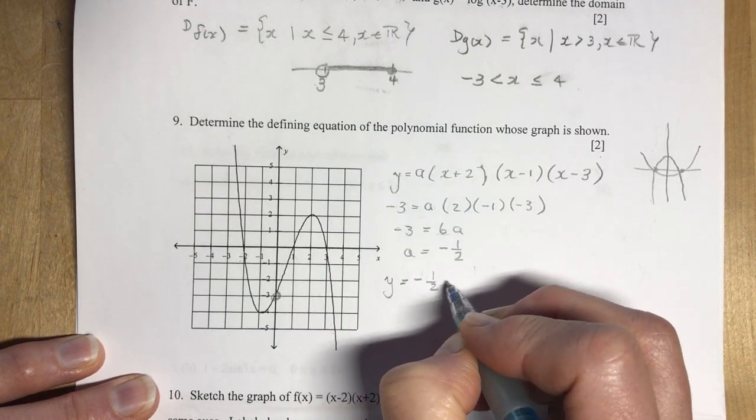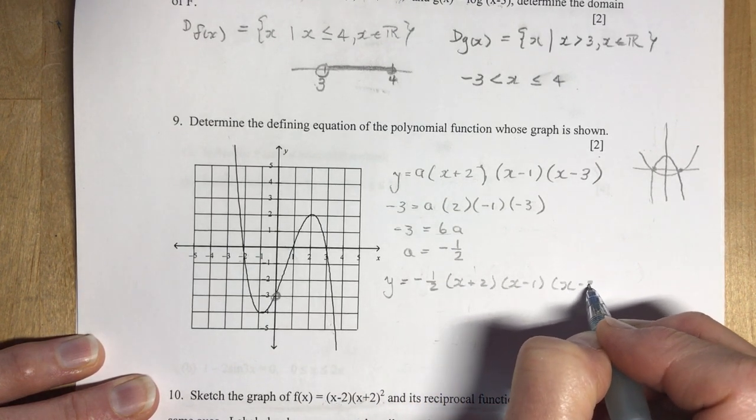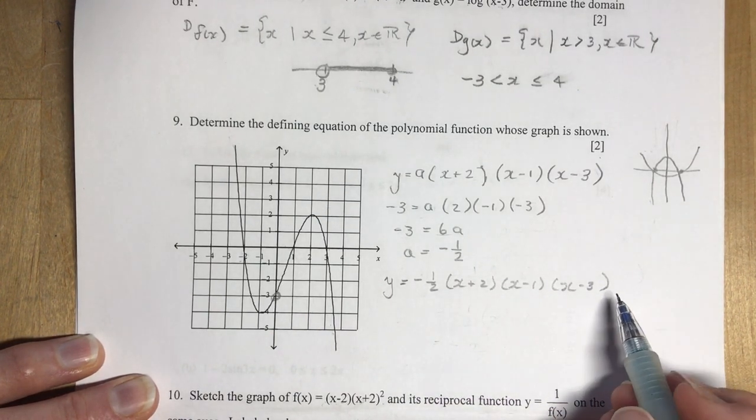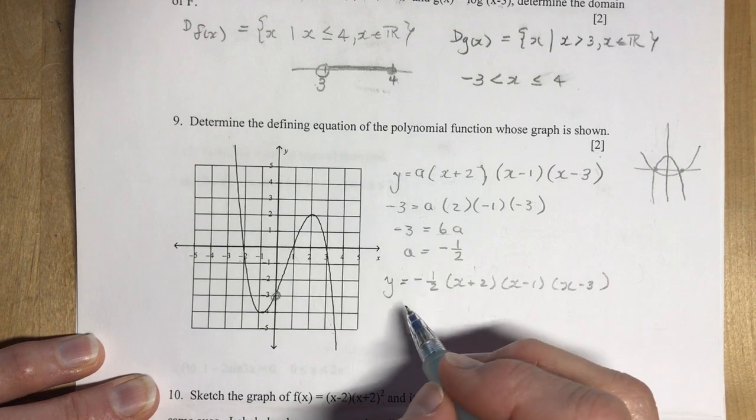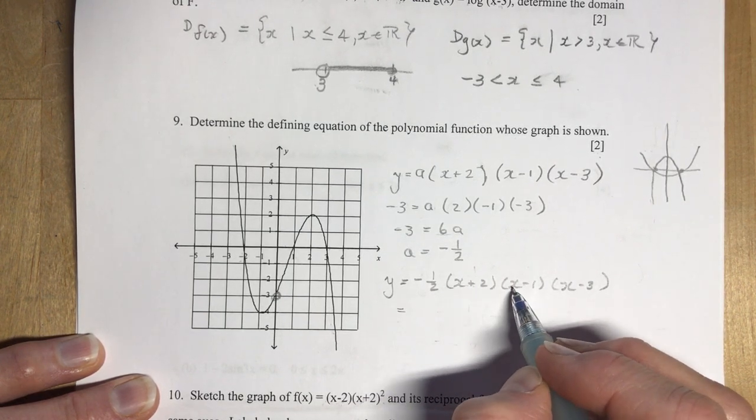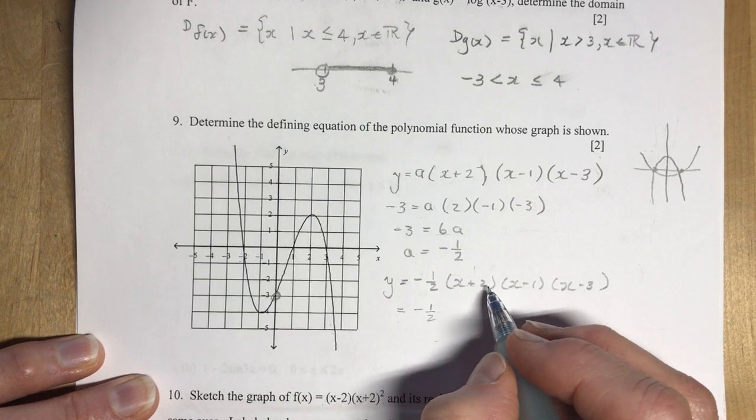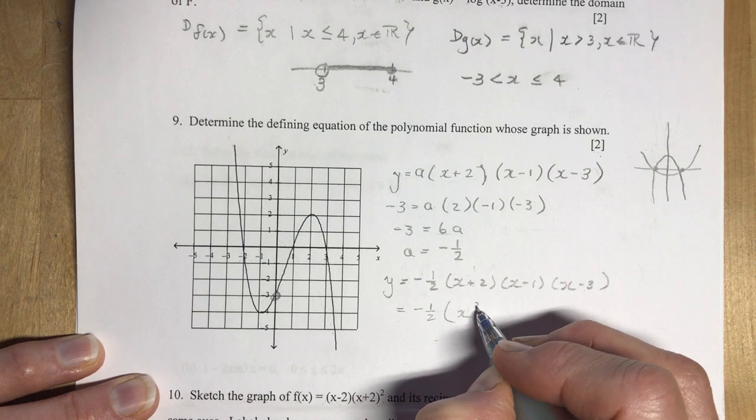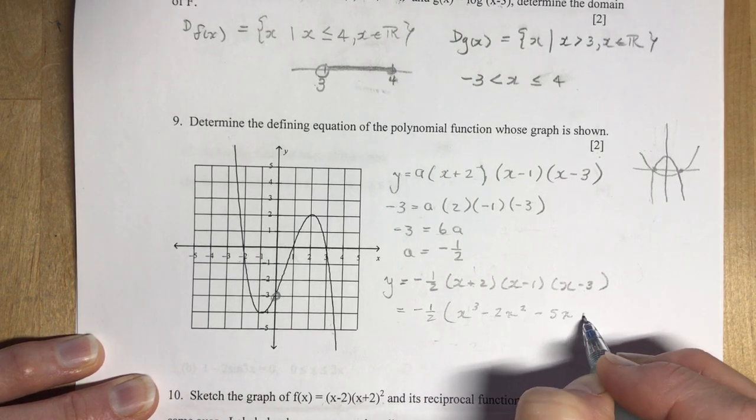So you'd say minus a half times x plus two times x minus one times x minus three. Now, I think I would have expected my students to expand this. Not for two marks, I would have made this a three mark question. And you should know how to expand carefully here. What you need to do is expand this first, do two binomials and then multiply it by the third and then times minus a half. And I'll tell you what you get when you multiply these three pieces together here.